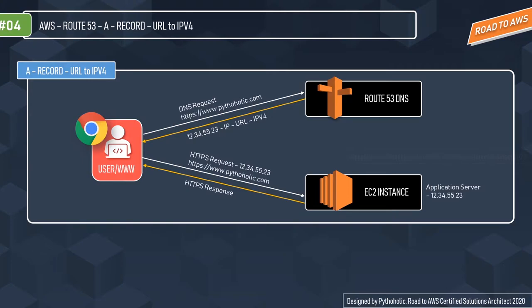The A record is a mapping of a URL to an IPv4 address. In simple terms, it's a table with an entry for your URL and its corresponding IPv4 address. For example, a web server hosted on an EC2 instance with IP 12.34.55.23 and domain https://www.pytholic.com: you send the DNS request with the URL, Route 53 resolves and returns the IPv4 address, then the client sends the HTTP request to the server. Remember: the A record is for IPv4, not IPv6.